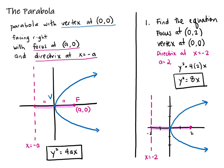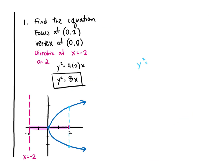The latus rectum is the line parallel to the directrix that goes through the focus. We're looking for the two points that define the latus rectum. We know the x value for those two points is 2, so we plug that into our equation: y² = 8(2), giving y² = 16, so y = ±4. Since we plugged in x = 2 and y = ±4, the two points that define the latus rectum are (2, 4) and (2, -4).